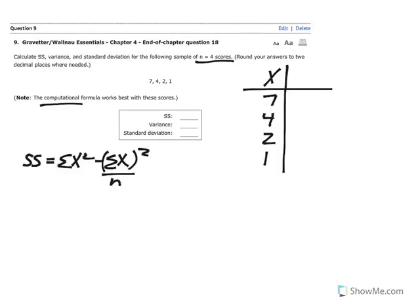We can start replacing variables of things that we know. At this point, all we know is sample size. We know that we're working with four scores. I'm going to enter that here, and then set up placeholders for all the other variables that are missing.